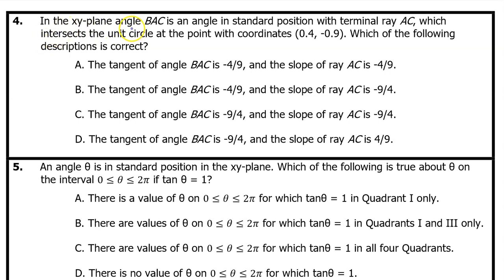Number 4. In the xy plane, angle BAC is an angle in standard position with terminal ray AC, which intersects the unit circle at the point with coordinates 0.4 comma negative 0.9. Which of the following descriptions is correct? Let's draw a sketch. First of all, here's a circle with this point 0.4 comma negative 0.9 showing. The angle BAC is in standard position, so one side must be on the positive x axis, and the vertex has to be at the origin. We are also told that the terminal ray AC intersects the unit circle at this point. So I've drawn the other side, the terminal ray, through this point, and this is AC.